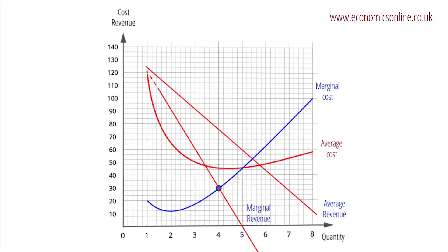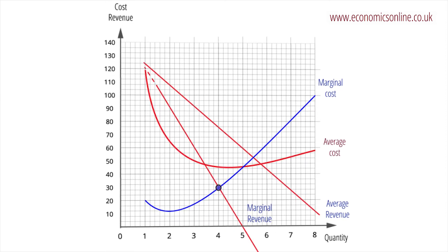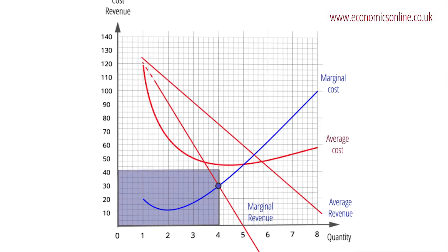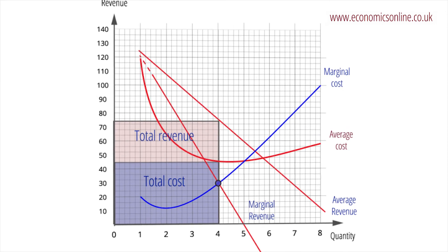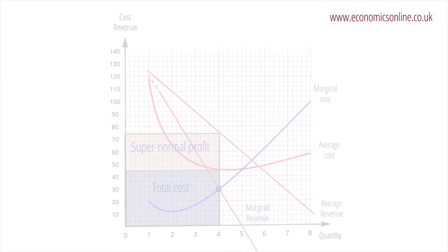Graphically, supernormal profits exist when the area of total revenue is greater than the area of total cost. Using the total cost and revenue curves, profits are maximised where the gap between them is the greatest.